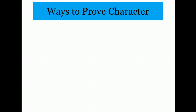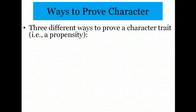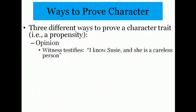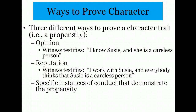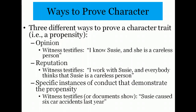There are three different ways to tell the jury about a person's character trait — their propensity to act in a particular way. We looked at these different forms of proof when we covered impeachment, but let's review. First, you could call a witness to testify about her opinion of the person — for example, a witness could testify, 'I know Susie, and she is a careless person.' Second, you could call a witness to testify about the person's reputation — so your witness could testify, 'I work with Susie, and everybody thinks that Susie is a careless person.' Third, you could use specific instances of conduct that demonstrate the propensity — specific examples — so your witness could testify, or you could introduce documents that show, Susie caused six car accidents last year.